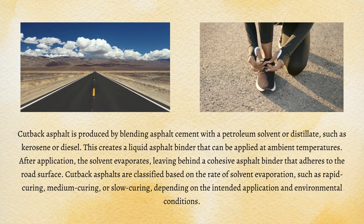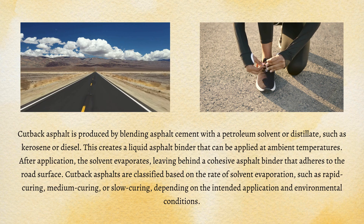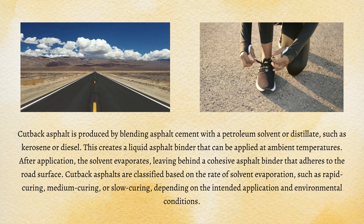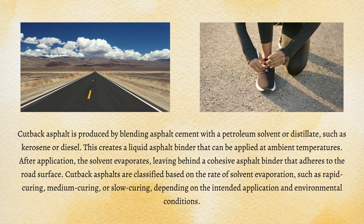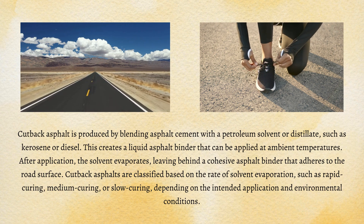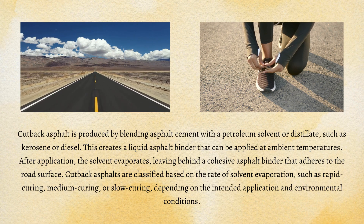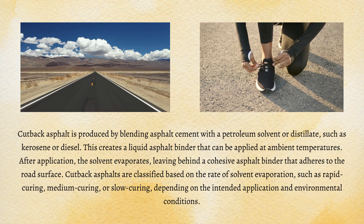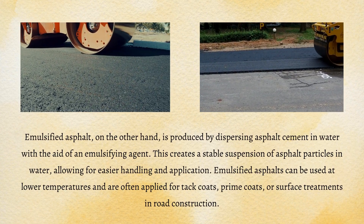Cutback asphalt is produced by blending asphalt cement with a petroleum solvent or distillate, such as kerosene or diesel. This creates a liquid asphalt binder that can be applied at ambient temperatures. After application, the solvent evaporates, leaving behind a cohesive asphalt binder that adheres to the road surface. Cutback asphalts are classified based on the rate of solvent evaporation, such as rapid curing, medium curing, or slow curing, depending on the intended application and environmental conditions.